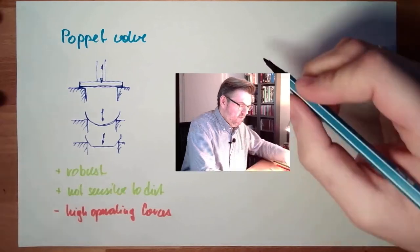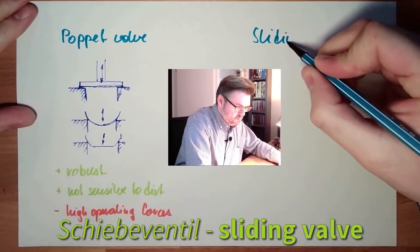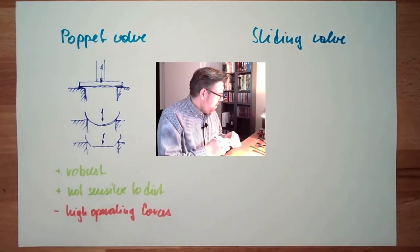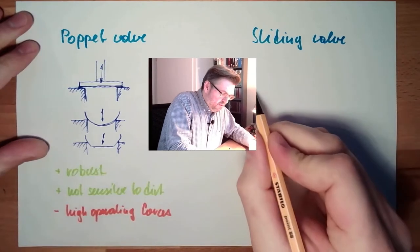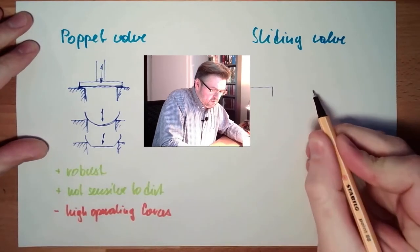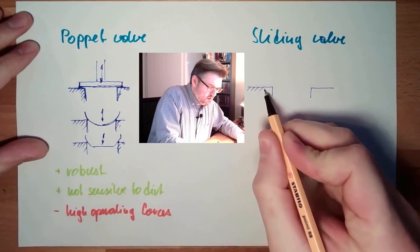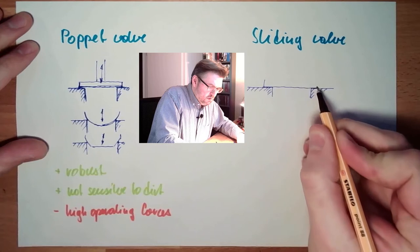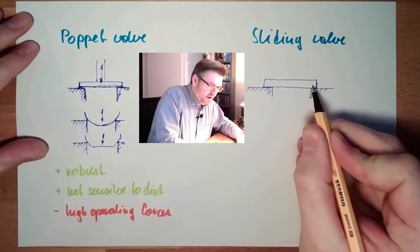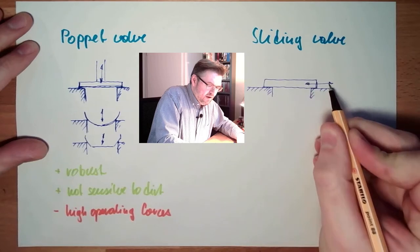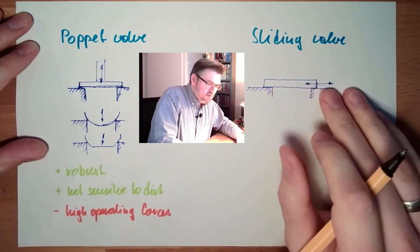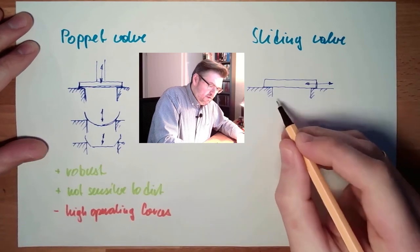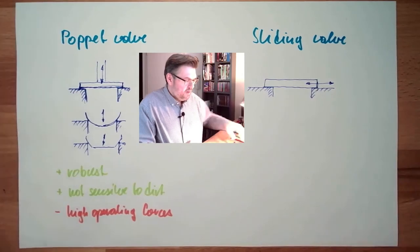And there is the sliding valve. The very simple sliding valve would be like this. There is the hole again we want to cover. There is also a plate shaped like, and we slide it open. This is a rather easy sliding valve.